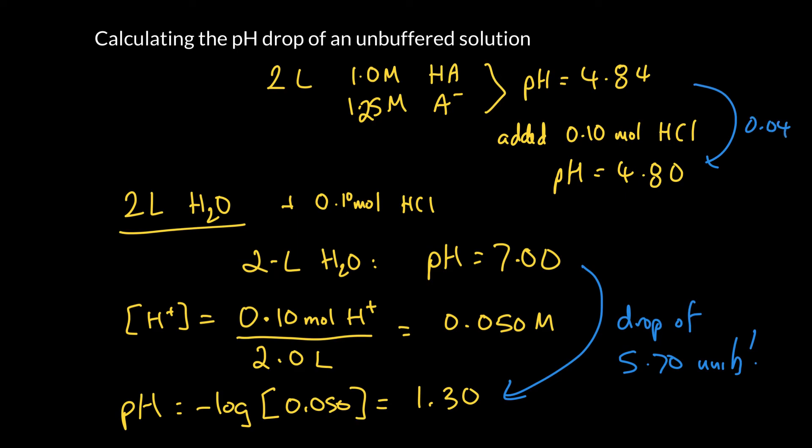So you can see that is the difference a buffer makes. So in an unbuffered solution just a small little bit of acid or base will cause a massive swing in the pH. But in a buffered solution as long as you don't overwhelm the buffer then you will only see a very small change in pH.